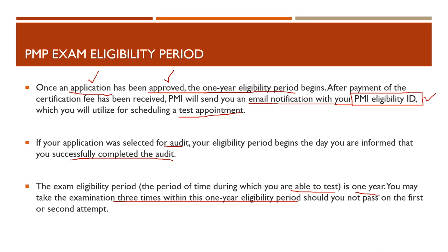If you didn't clear the exam on the first go, you can actually take it two more times within the one-year eligibility period. If you take up the PMP exam three times within the one-year eligibility period and are still not able to clear it, then you will have to fill up a new exam application form. Keep in mind that you cannot move the exam outside of this one-year eligibility period.